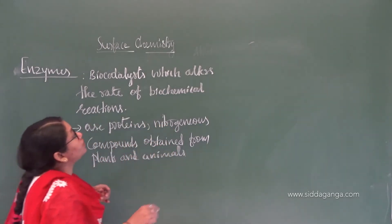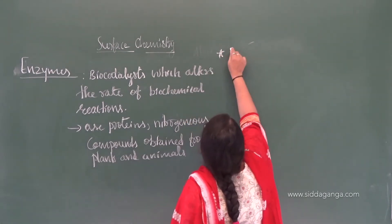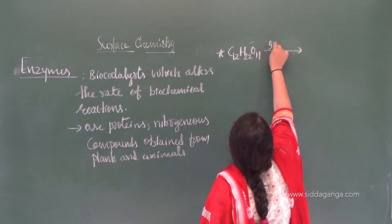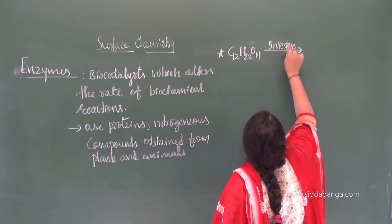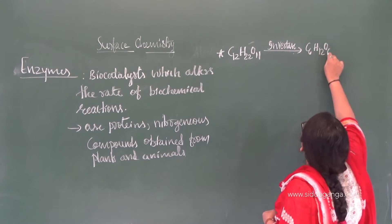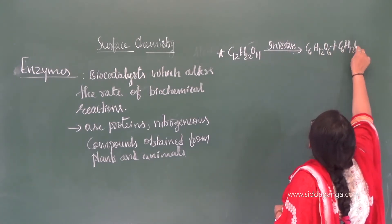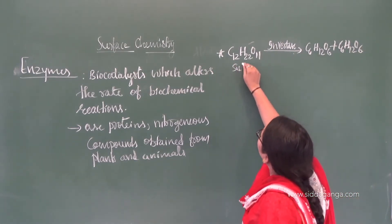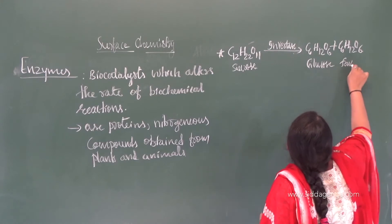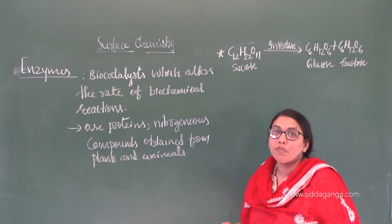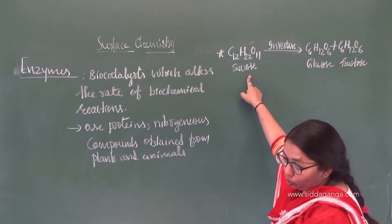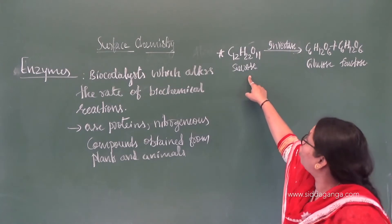Let us look at some examples of enzymes. If sucrose (C₁₂H₂₂O₁₁) is made to react with an enzyme called invertase, obtained from yeast, it will be converted into glucose and fructose. Both have the same molecular formula C₆H₁₂O₆ but differ in their functional group. Sucrose upon hydrolysis is converted into glucose and fructose.